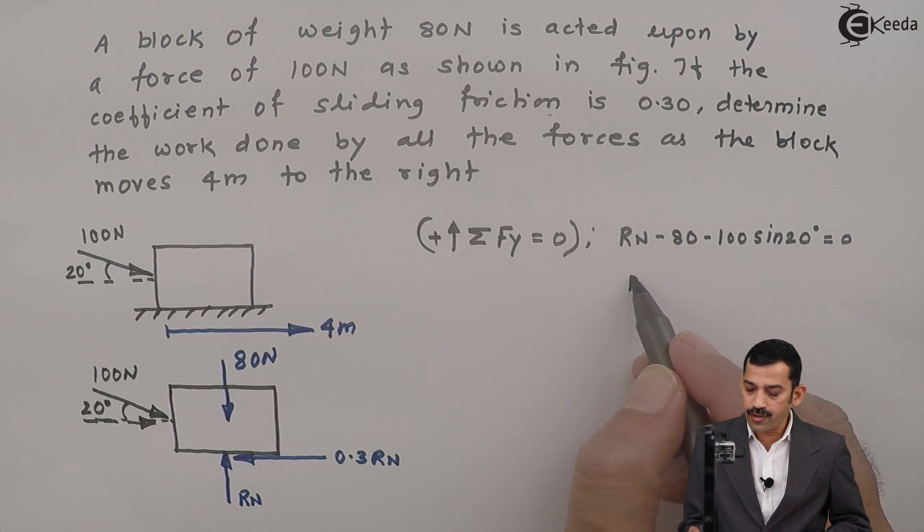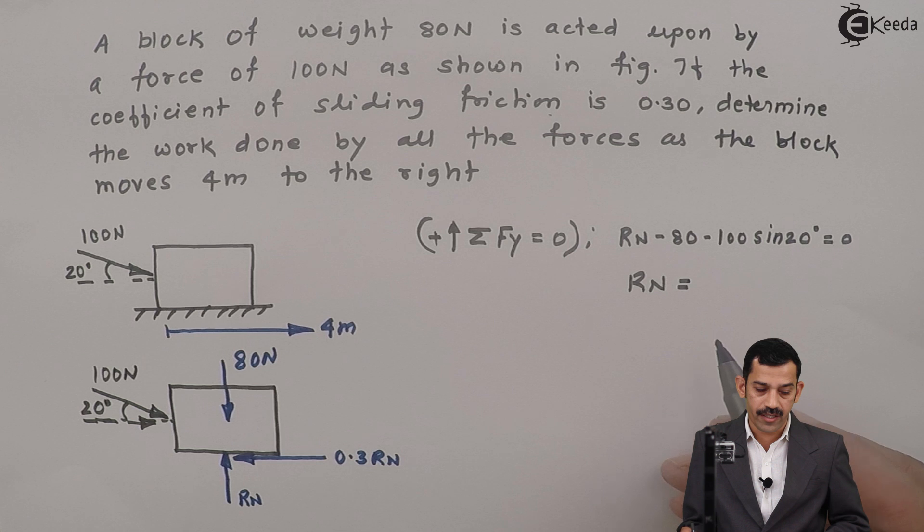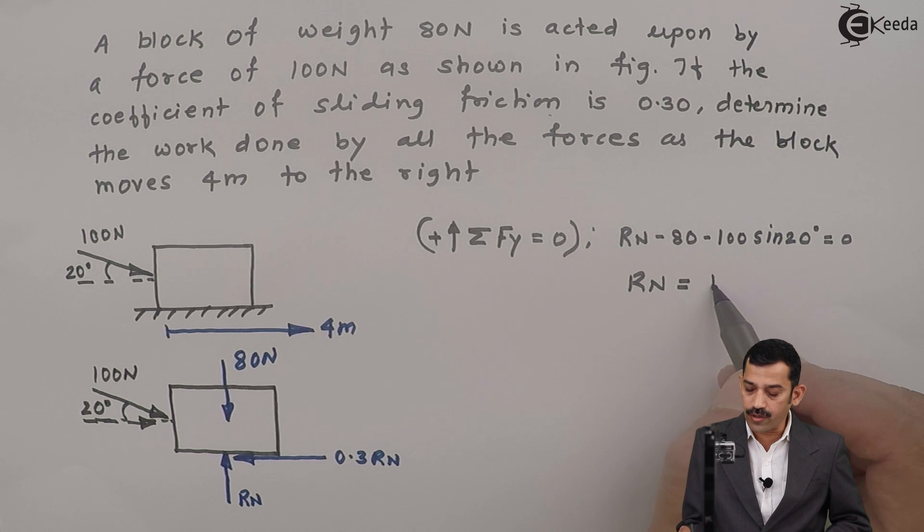Therefore, if you calculate using calculator, normal reaction RN comes out to be 114.20 Newton.